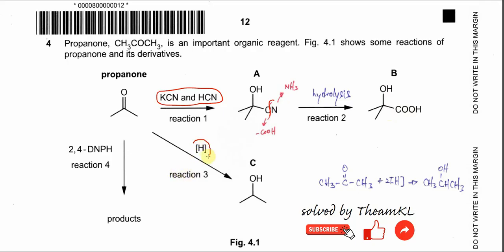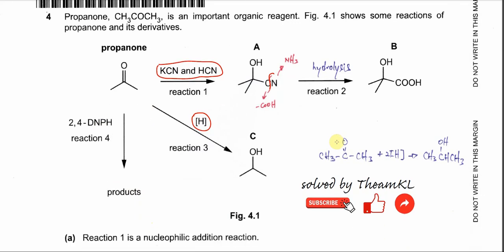Reaction 3 uses [H], a reducing agent, so propanone undergoes reduction to form compound C, which is an alcohol. The last reaction is with 2,4-DNPH to test for carbonyl groups, and the product forms an orange precipitate. This is a general overview of figure 4.1.